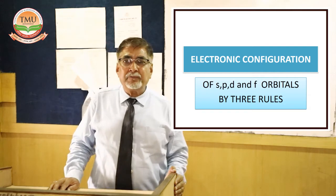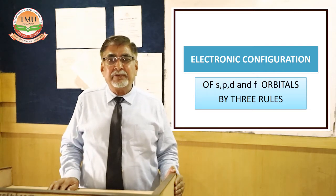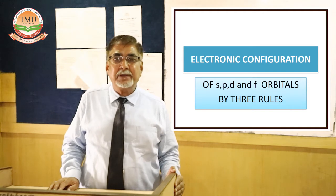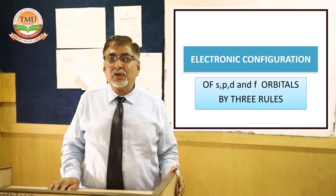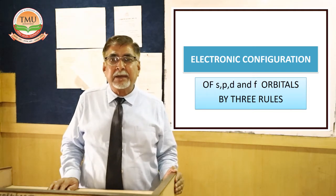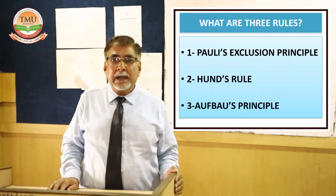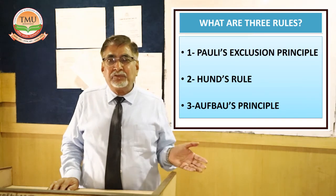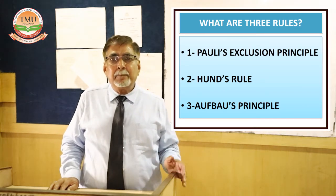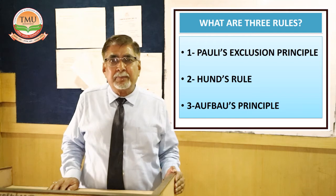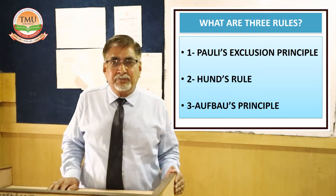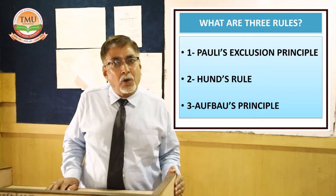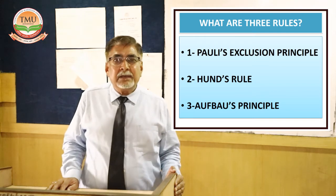Electronic configuration is based on the filling of the S, P, D, and F orbitals. These orbitals have been seen in the spectrum. S stands for spherical, P stands for principal, D stands for diffuse, and F stands for fundamental orbitals.